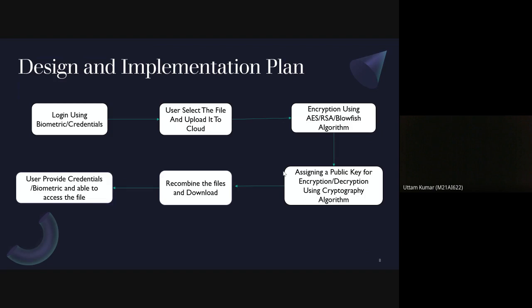So there are four methods we are following: first, authentication; second, key generation operation; third, encryption with a public key assigned to all data parts divided into n-bits; and fourth, decryption — recombining the whole file and delivering it to the user. The user can access data while sitting at any cafe, bar, or restaurant — they simply provide their biometric or login credentials and access the data. This is the main concept and how we are going to implement the project.